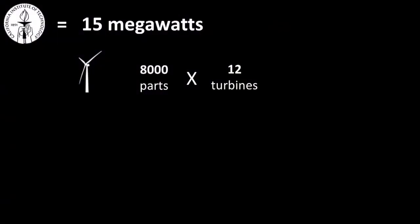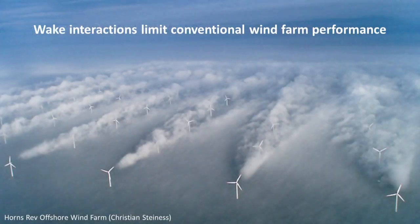These are a marvel of modern engineering with over 8,000 components each. With just about a dozen of them at a good windy site, we could produce that energy. But there's a problem: the turbines at the front of the array create turbulence that reduces the performance and the lifetime of all of the other wind turbines, and ultimately increases the cost of the energy that's produced.